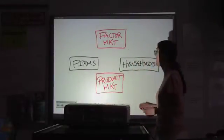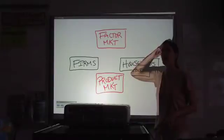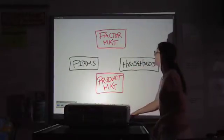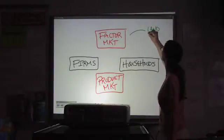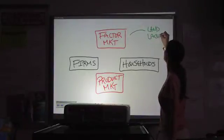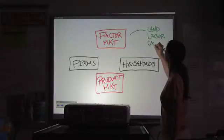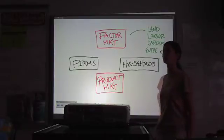Now, the factor market is where your factors of production are going to be bought and sold. By factors of production, we mean land, labor, capital, and entrepreneurship. And I'm going to abbreviate that one because it won't fit.